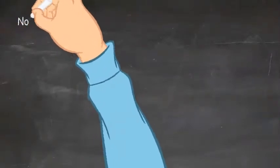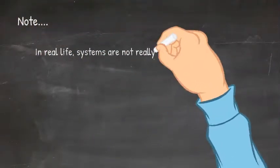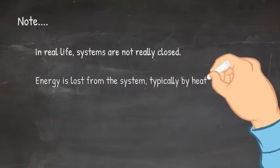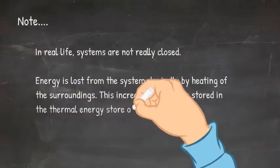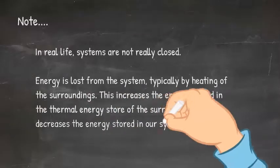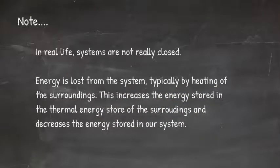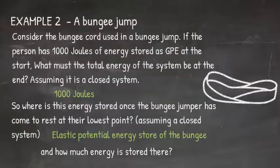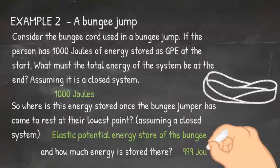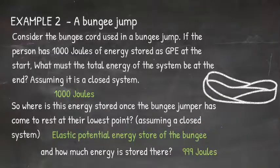A quick note about closed systems. In real life, systems are not really closed. Energy is lost from the system, typically by heating of the surroundings. This increases the energy stored in the thermal energy store of the surroundings and decreases the energy stored in our system. So if we go back to our example of the bungee, there might not actually be 1000 joules of energy stored in the elastic potential energy store of the bungee. There might only be 999 joules because one joule has been lost to the surroundings, and that is why eventually the bungee jumper comes to a rest.